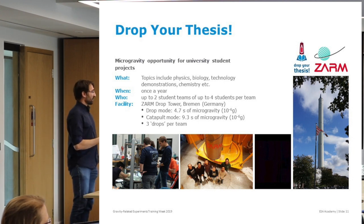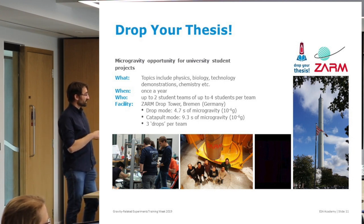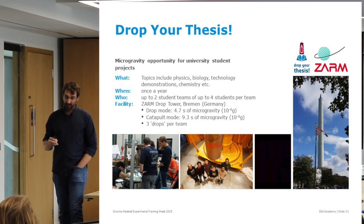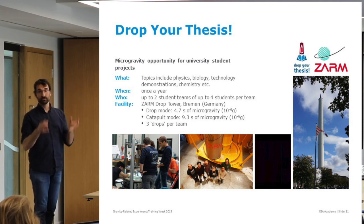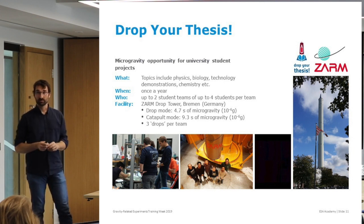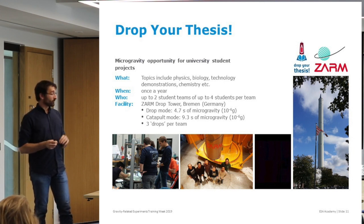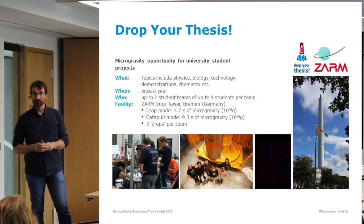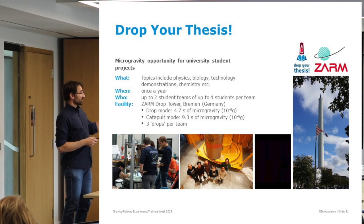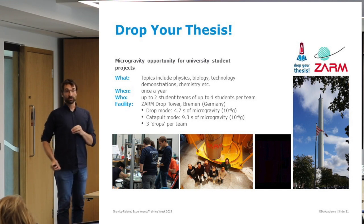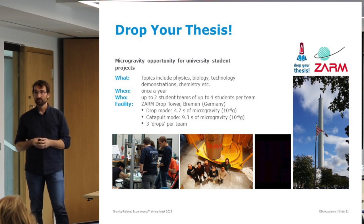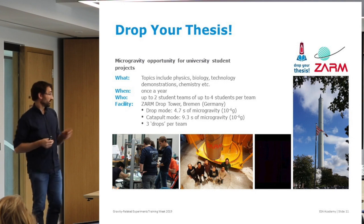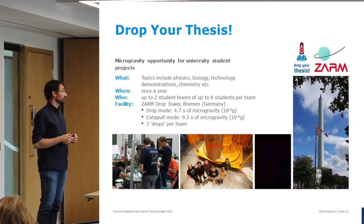The drop tower is located in ZARM in Bremen. It's a 150-meter tall tower; inside there's a massive tube used to drop a gondola carrying your experiments, giving you 4.7 seconds of freefall for your experiment. There's also a catapult mode where instead of just dropping, the gondola is shot upward from below and travels up and back down, giving you 9.3 seconds of microgravity conditions during that parabola.